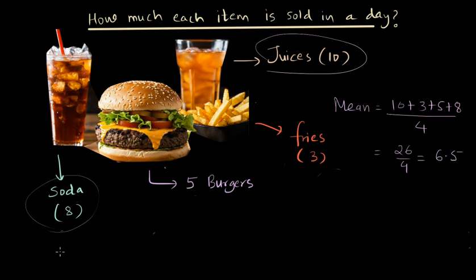Would it be fair if you prepared your raw material in a way that you could sell 6.5 sodas, 6.5 burgers, 6.5 fries, or 6.5 juices? Clearly, this is a wrong decision. Using mean in such scenarios where you want to know which item was sold the most doesn't work, and that's where we think about mode.